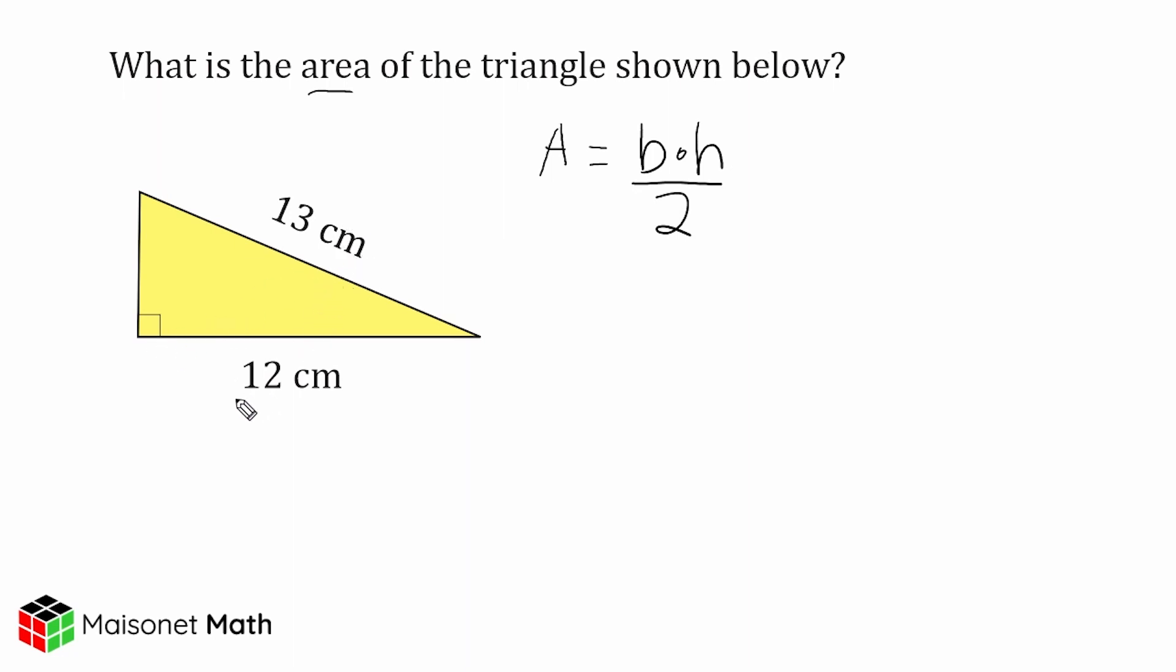12 and 13 aren't the base and height of our triangle. 12 can be considered the base, but the height is from the highest point of our triangle straight down. So this line right here is the height of our triangle, so we have to use the Pythagorean theorem to figure out what this missing leg is.